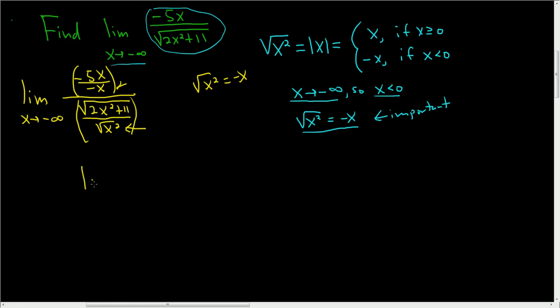So this is the limit as x approaches negative infinity, boom, these cancel, you just get 5 over, in the denominator, we can combine things. So it's 2x squared plus 11 over x squared,